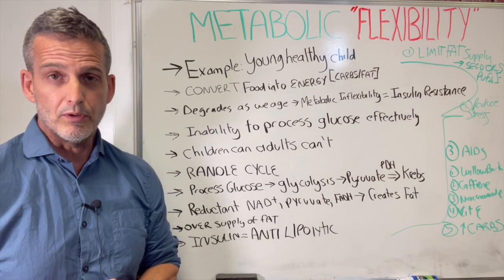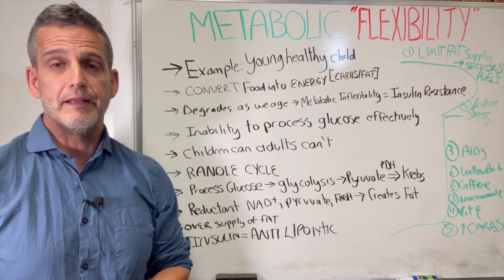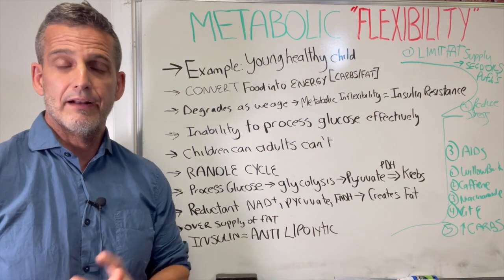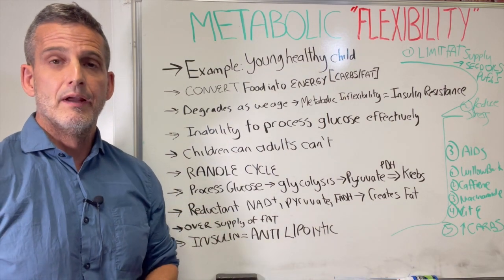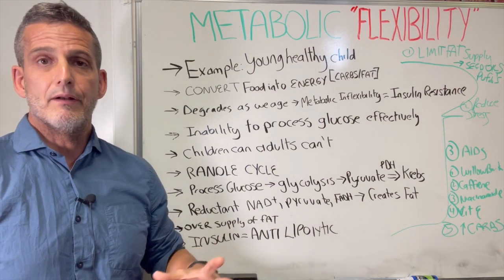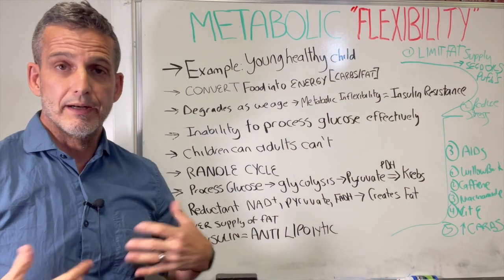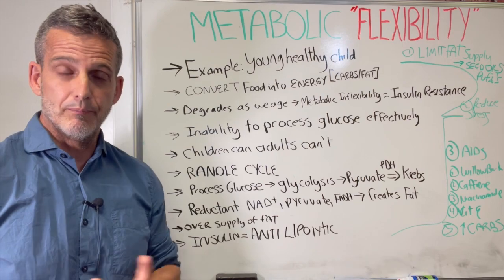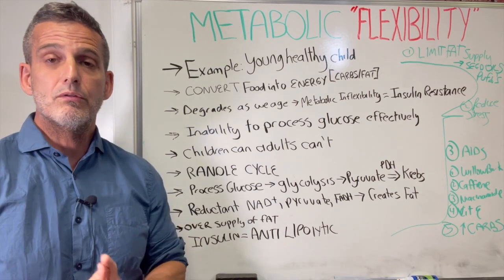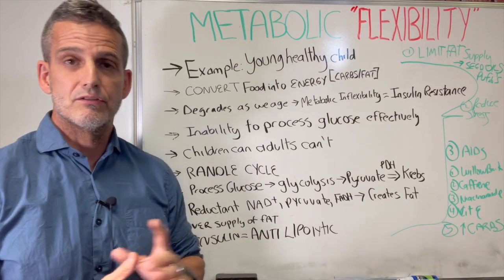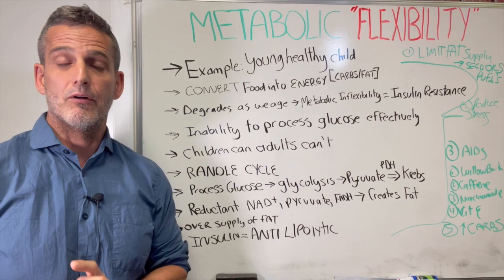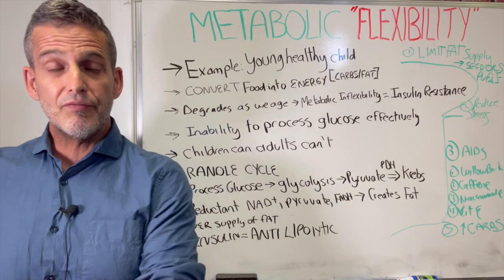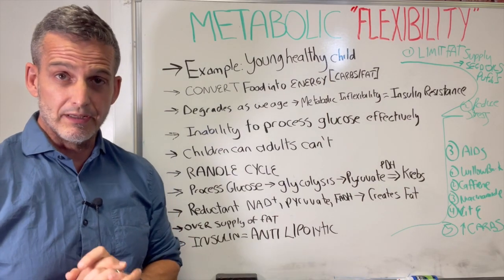To summarize: metabolic flexibility means that a young, healthy child given glucose for a meal will generate energy quickly, become hyper, get tired, fall asleep, recover quickly, and when not getting fuel, their body shifts into lipolysis — burning fat — then effectively burns glucose again when refueled. As we get older, environmental factors, wear and tear, stress, and cortisol impact our ability to shift between burning fat and glucose — to turn that system off and back on again.